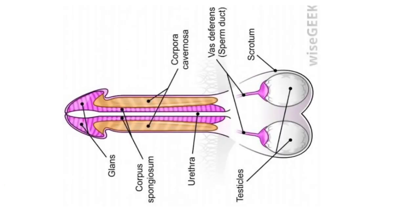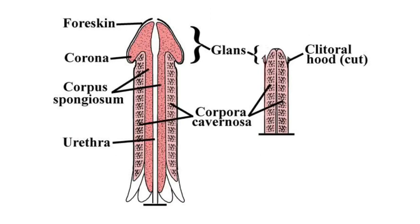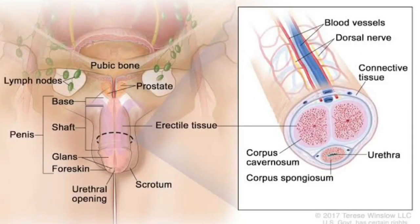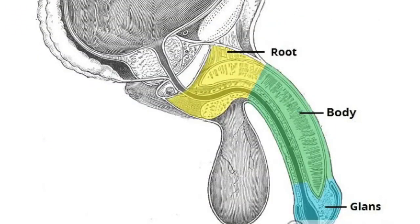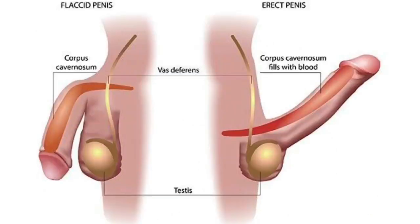It is composed of three cylindrical bodies of erectile cavernous tissue. These three cylindrical bodies are arranged as follows: two corpora cavernosa are located dorsally, whereas a single corpus spongiosum is located ventrally. The p structure consists of the following parts: the root, the body, and the glans. When we say that the p structure is in anatomical position, we mean it is standing erect. When it is flaccid, the dorsum of the p structure will be directed anteriorly.